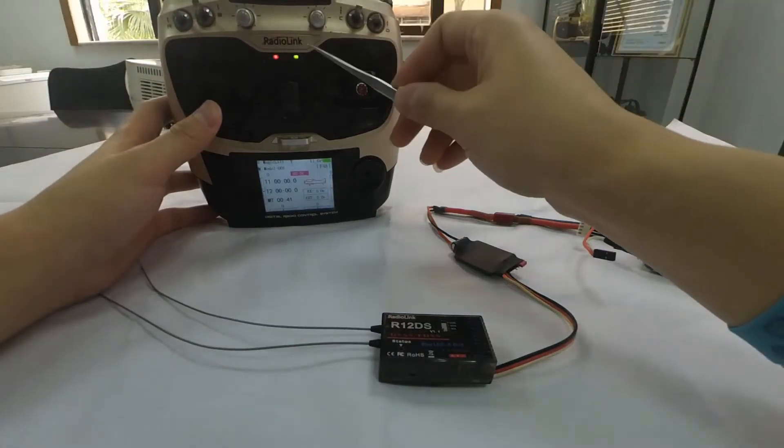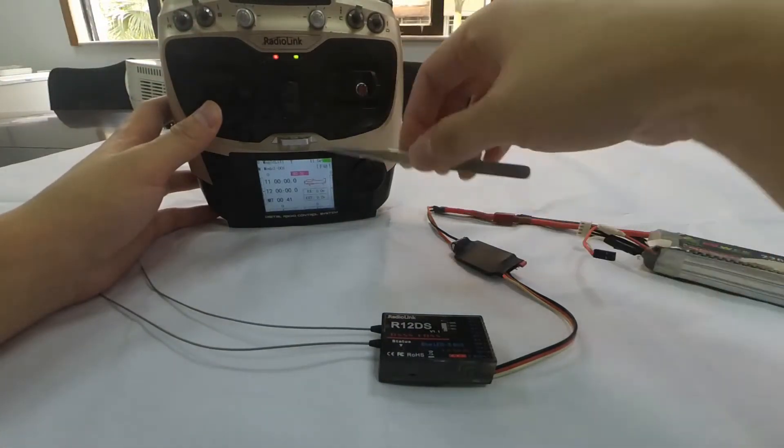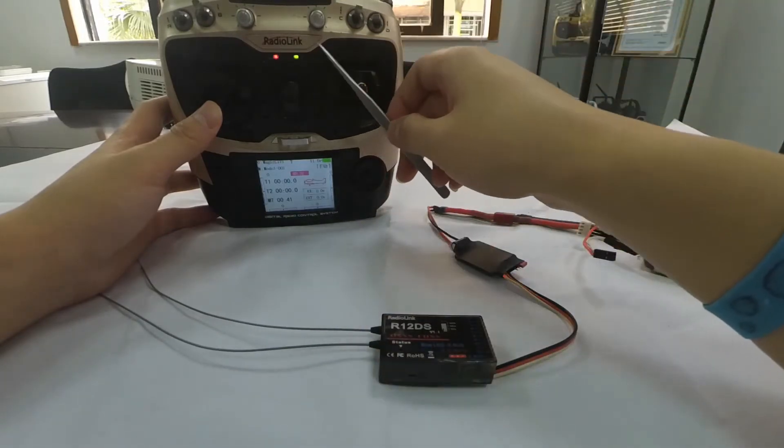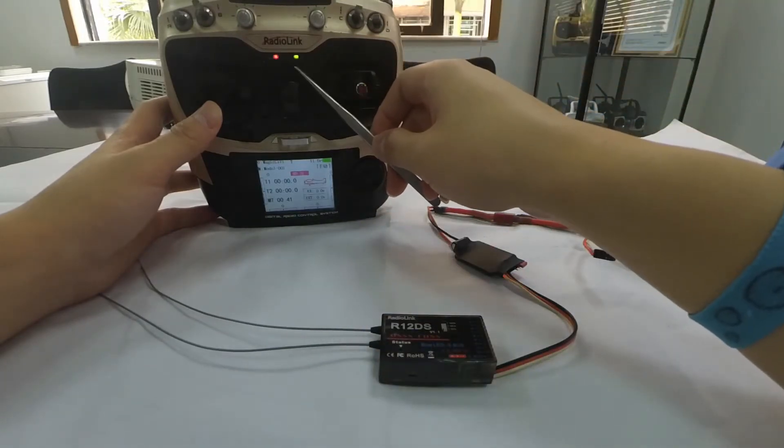Power on the transmitter first. Check if the green LED is always on. If yes, then we can process the binding directly.